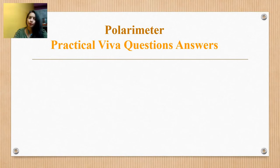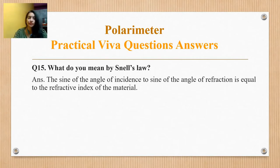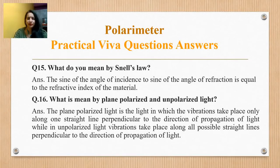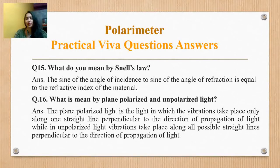What do you mean by Snell's law? The sine of the angle of incidence to the sine of the angle of refraction is equal to the refractive index of the material. What is plane polarized or unpolarized light? In plane polarized light, vibrations take place only along one straight line perpendicular to the direction of propagation. In unpolarized light, vibrations take place along all possible straight lines perpendicular to the direction of propagation.